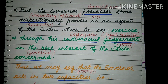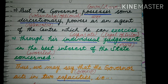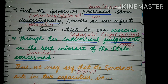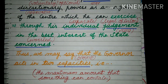But the Governor possesses some discretionary powers as an agent of the center — परन्तु जो Governor होता है, वो भी अपने पास कुछ discretionary — voluntary या optional — powers रखता है as an agent of the center. Which he can exercise through his individual judgment — उसकी जो व्यक्तिगत judgment — legal opinion — वो अपने पास रखता है — in the best interest of the state concerned, जब उसको लगता है कि राज्य की चिंताओं के बारे में राज्य को interest हो रहा है.